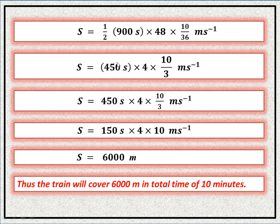Dividing 450 by 3 gives 150, and multiplying 150 by 40 gives 6000. The units of seconds and per-second cancel, leaving meters. Thus S equals 6000 meters — the train covers 6000 meters total in 10 minutes. This was the graphical method.